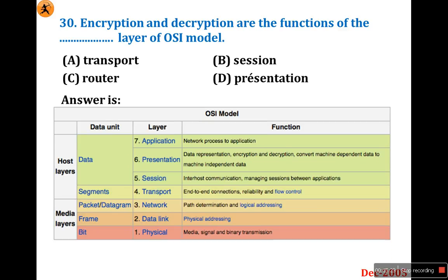Encryption and decryption happen in the presentation layer. To summarize the OSI layers: physical layer handles media, signal, and binary transmission; data link layer handles physical addressing; network layer handles path determination and logical addressing; transport layer handles end-to-end connection, reliability, and flow control; session layer handles inter-host communication; presentation layer handles data representation, encryption, decryption, and converting machine-dependent data to machine-independent. So the answer is D: presentation layer.